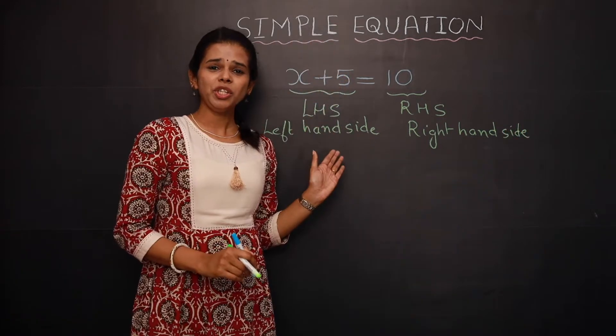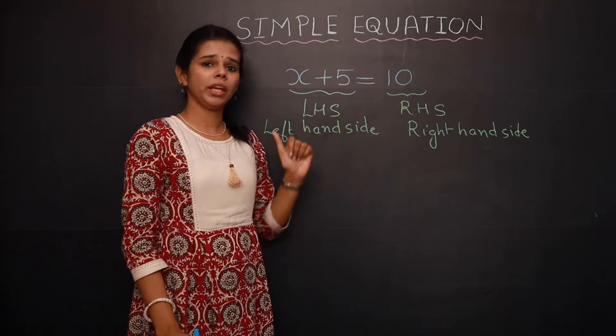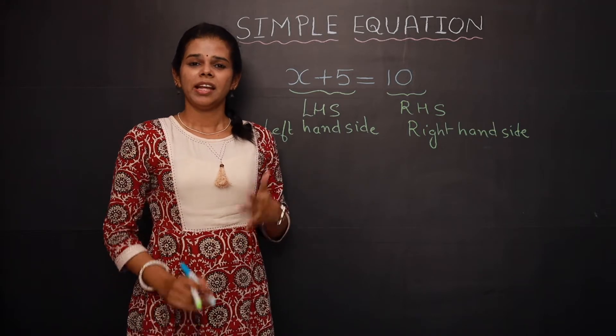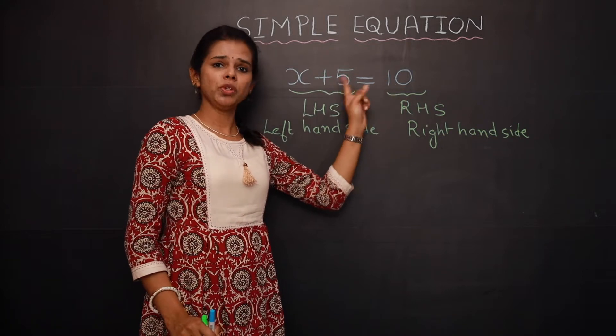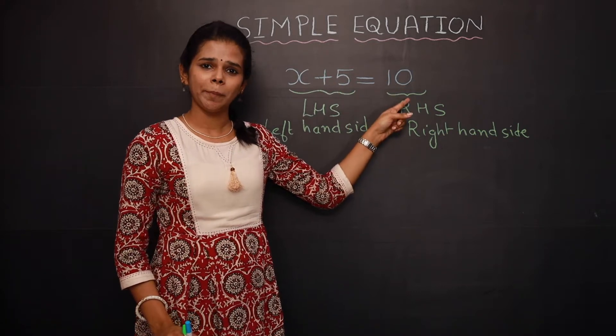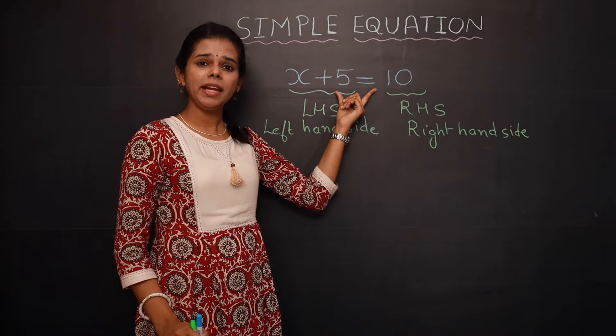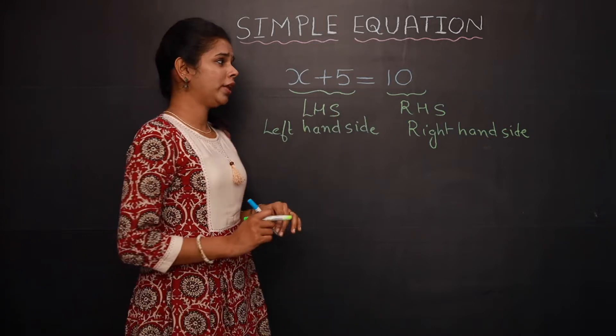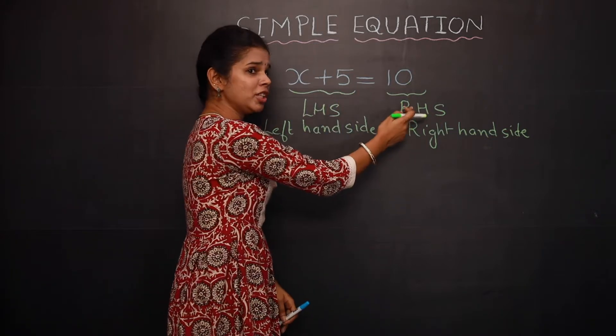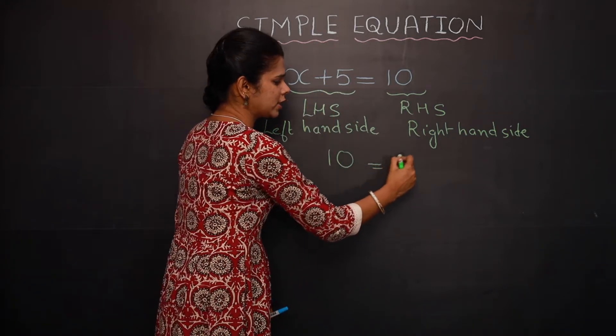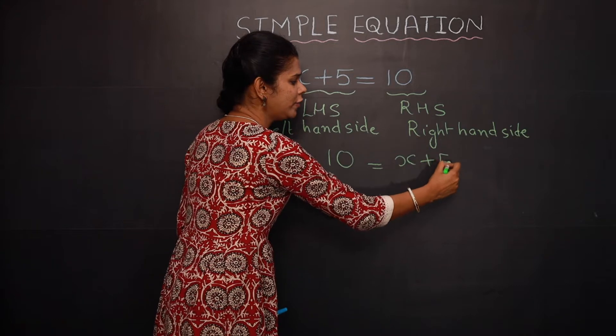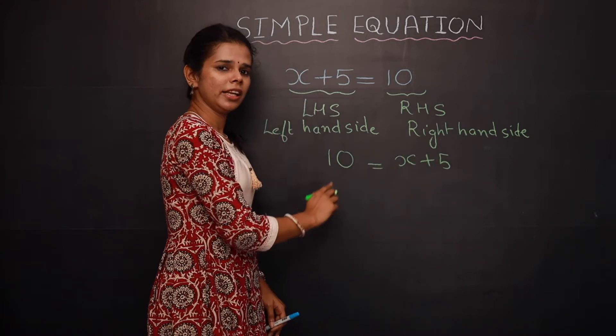An equation is a condition on the variable. What is a condition? The condition states that the value of both the expressions on both sides should be the same. Their value remains the same. Please note that even if the LHS and RHS are interchanged, like 10 equal to x plus 5, the equation remains the same.